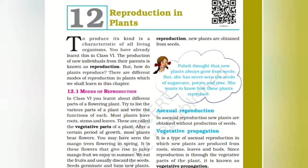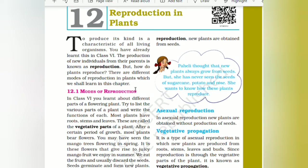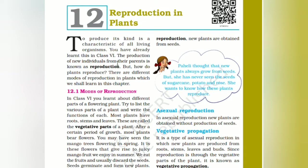Hello, my dear students. Welcome to Teacher at Home. Today's class we are going to learn the twelfth chapter, that is Reproduction in Plants. To produce its kind is a characteristic of all living organisms. You can already learn this in chapter 6, where we already discussed reproduction.